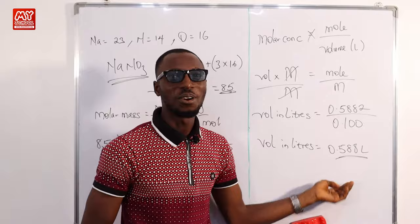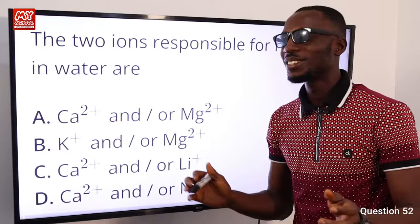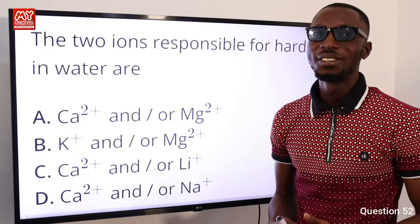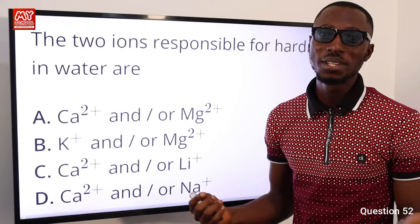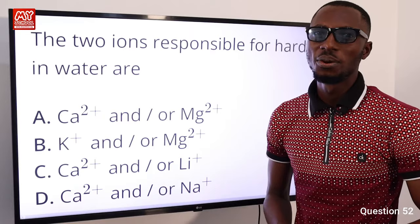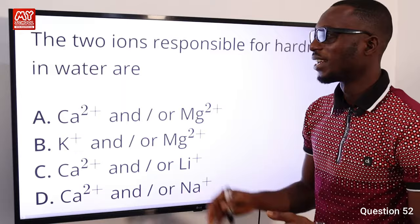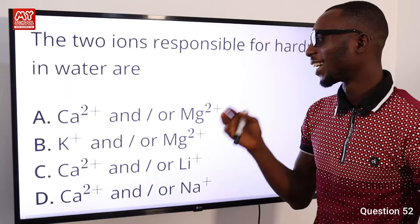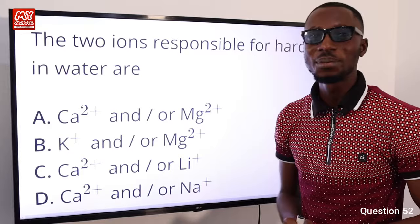Question 52: The two ions responsible for hardness in water. We have soft water and hard water. What makes water hard is the presence of dissolved salts of calcium and magnesium — such as calcium/magnesium sulfates or calcium hydrogen carbonate. So the ions responsible for hardness are calcium and magnesium. The correct option is A.